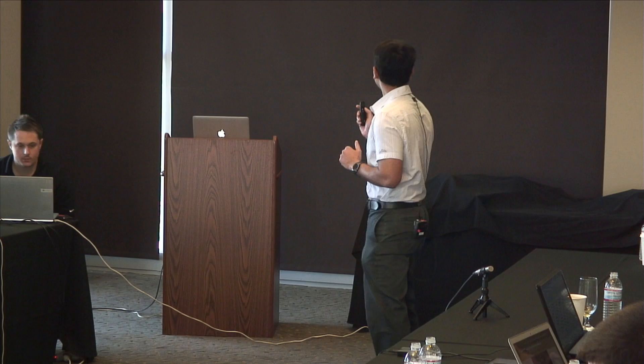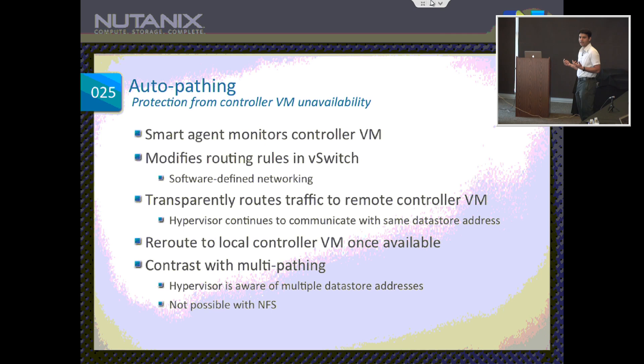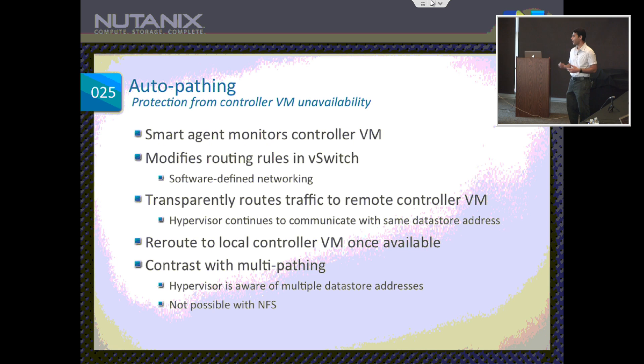They don't share MAC addresses — this will become clearer through the next slide. It transparently routes traffic to a remote controller VM, and the hypervisor just continues to communicate with the same datastore address. In the case of NFS, there is an IP address. ESX continues to send requests to that IP address, and they just happen to reach a remote controller VM because of the reroute. When the smart agent discovers the local controller VM has come back online, it reroutes traffic back to local.